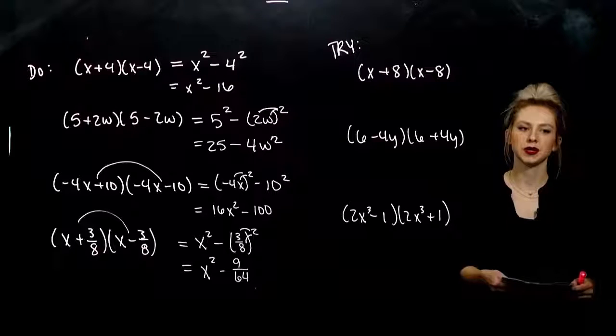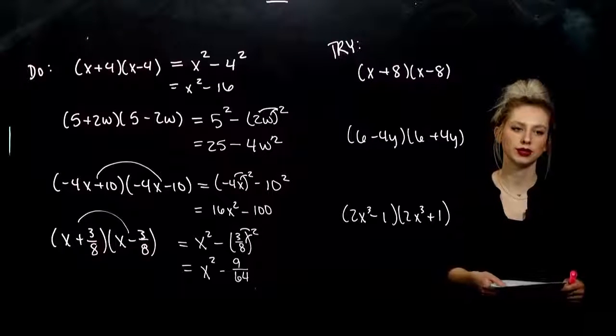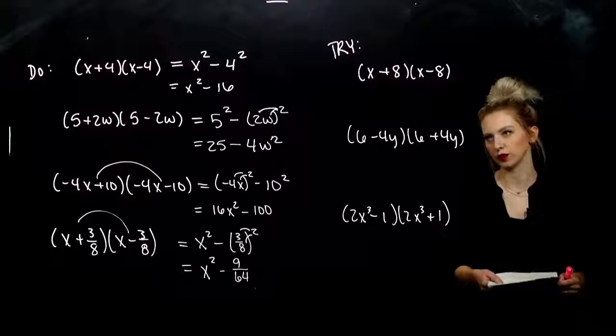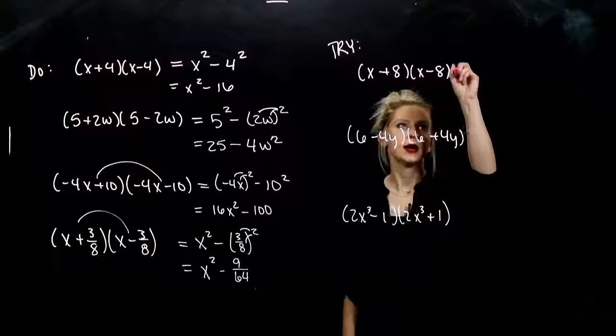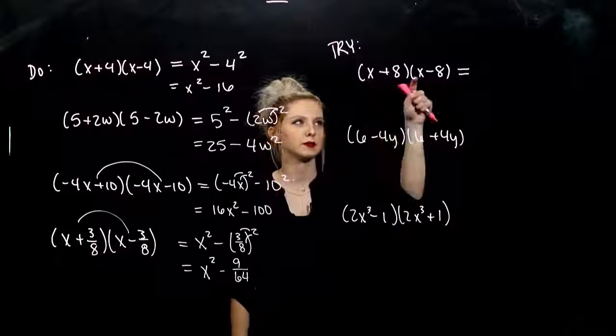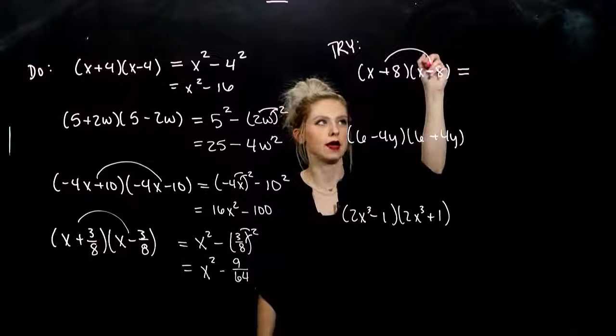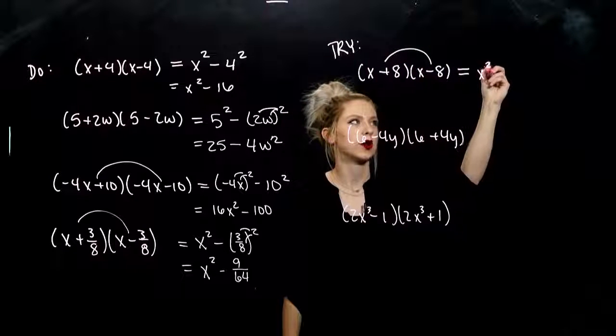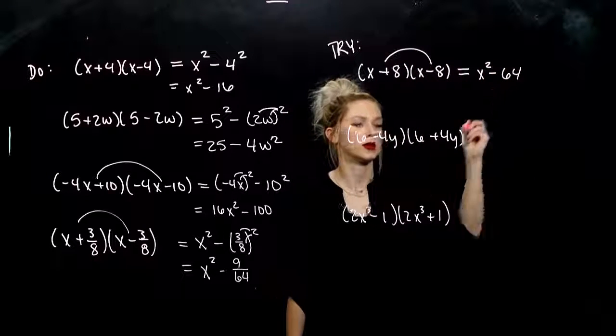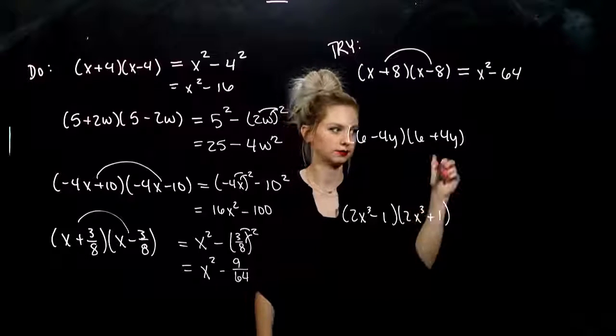So, go ahead and take those next three. Use the trick if you like. Foil them out traditionally if you're not comfortable using it. I'm going to use the trick though and see what comes out. Same, same, different sign. So, I take the first one squared and I subtract off the last one squared. Look how fast it is.